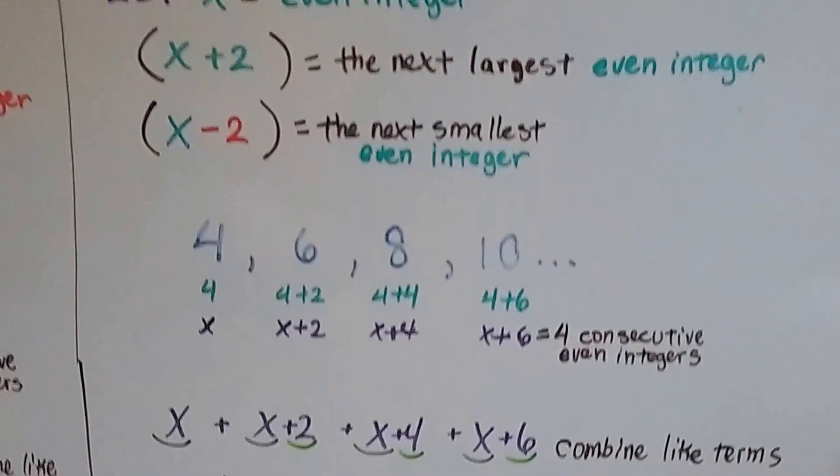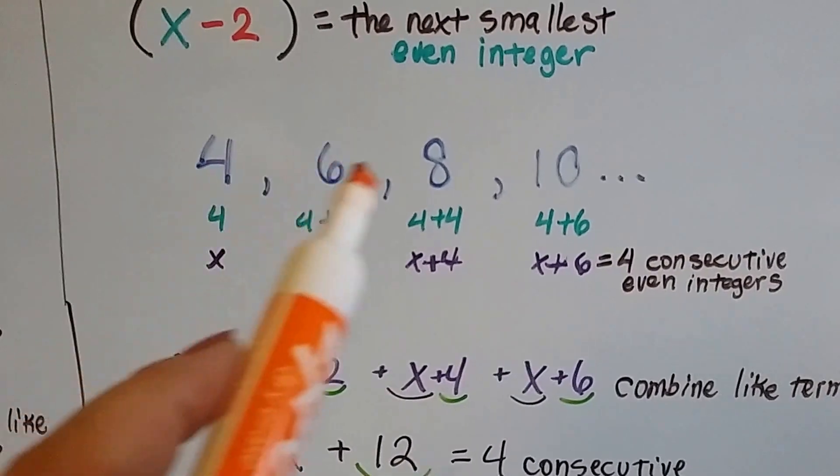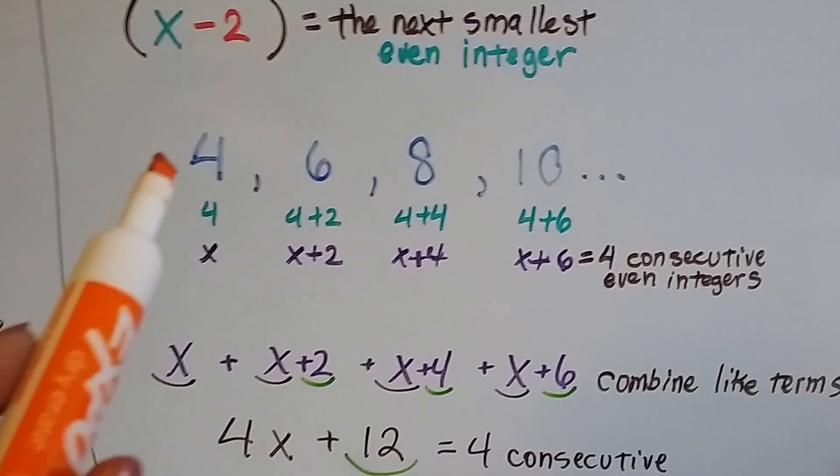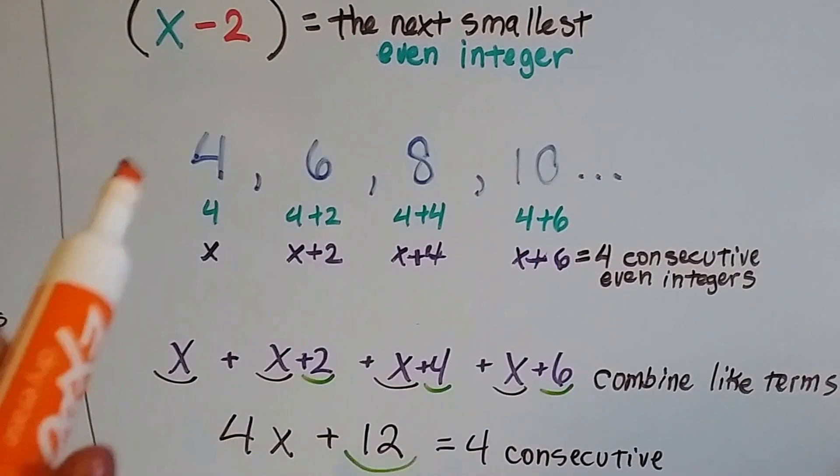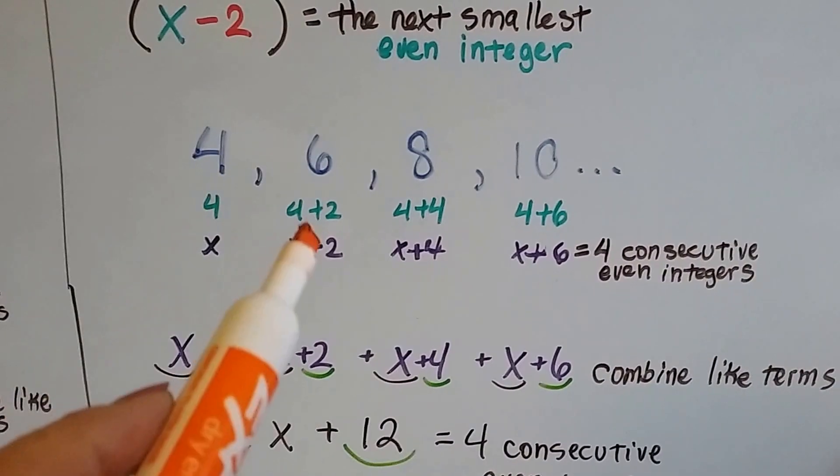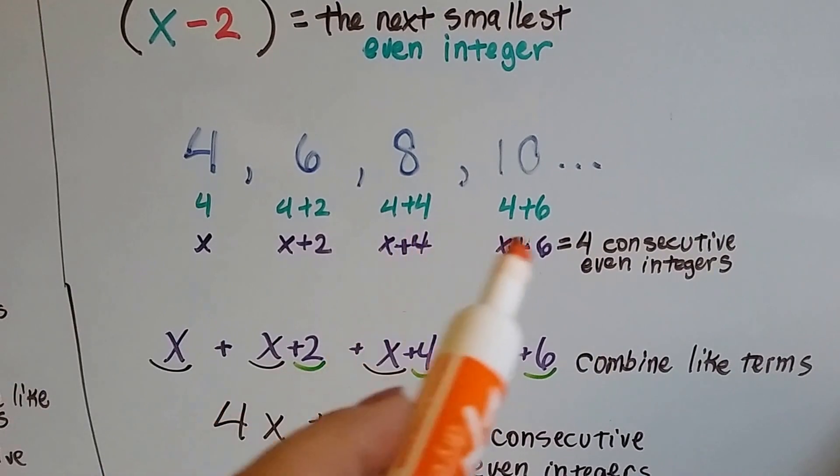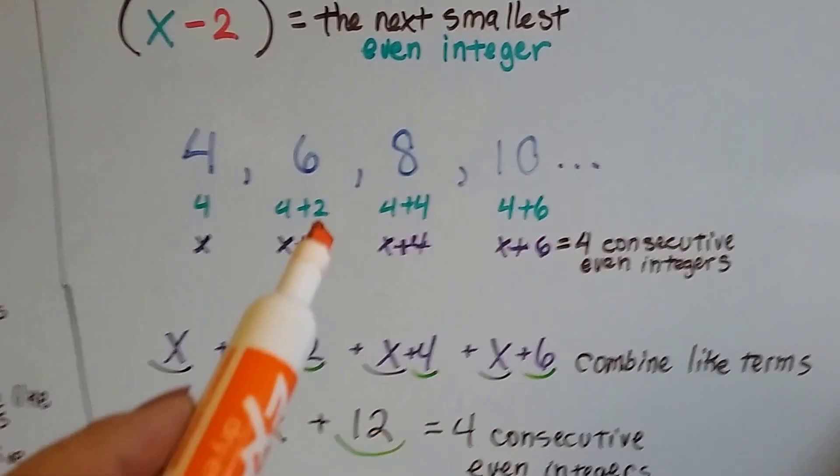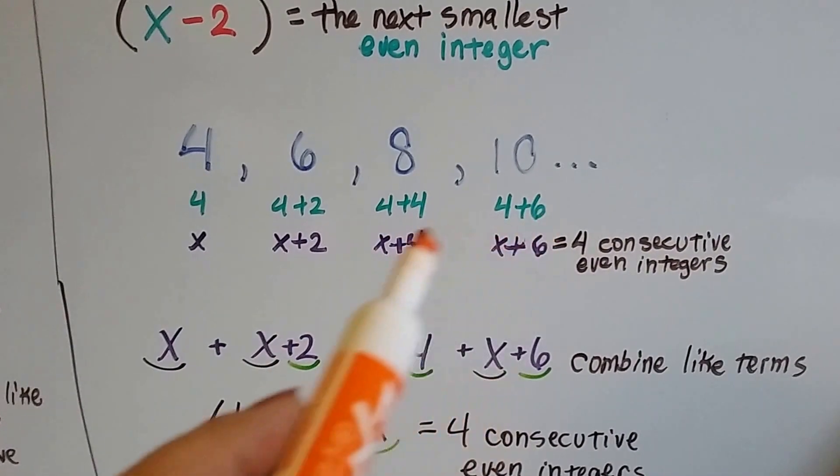Just like it was for the odd ones, because that skip counts by 2. So we have 4, 6, 8, 10. These are consecutive even integers counting by 2's. So we could do 4, then 4 plus 2 to get the 6, 4 plus 4 to get the 8, and 4 plus 6 to get the 10.